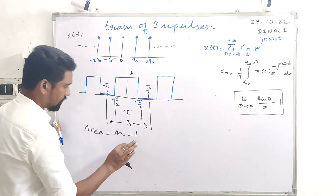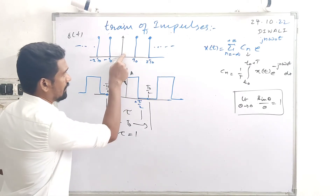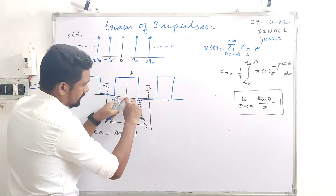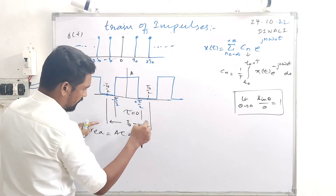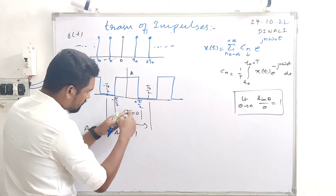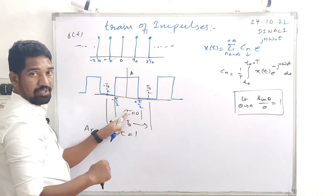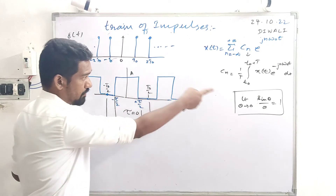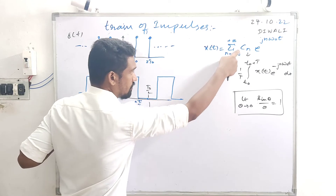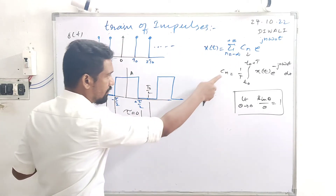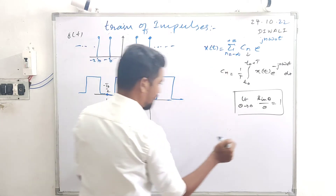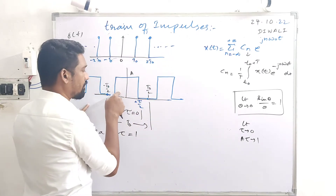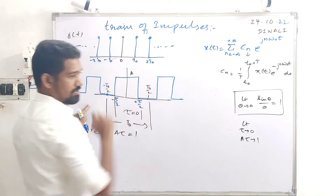When A·τ = 1, this square wave can be converted to an impulse by compressing the width — making τ tend to zero while keeping A·τ = 1. As the width goes to zero with the same height, that becomes an impulse. So we find the exponential Fourier series for the square wave first, then apply the limiting condition τ→0 and A·τ→1 to get the result for the impulse.